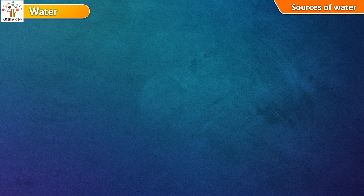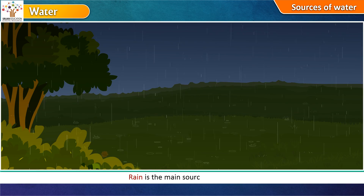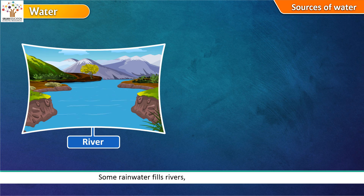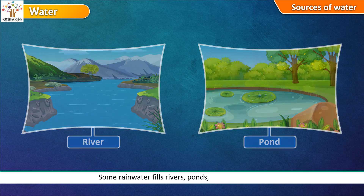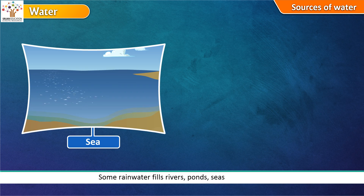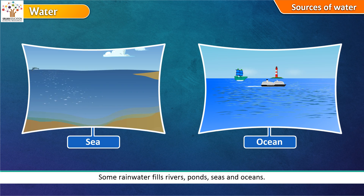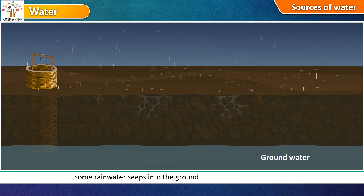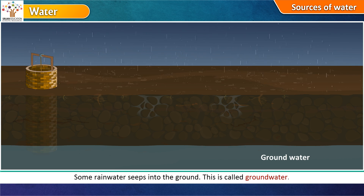Sources of water: Rain is the main source of water. Some rainwater fills rivers, ponds, seas and oceans. Some rainwater seeps into the ground. This is called groundwater.